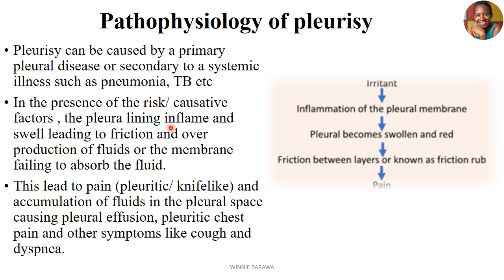The pathophysiology of pleuritis explains how the disease starts. Pleuritis occurs in the presence of another disease — it could be pneumonia, TB, or pulmonary neoplasms and cancers. Pleuritis can be caused by a primary pleural disease or secondary to systemic illnesses like pneumonia and TB. In the presence of these causative factors, the pleural lining will get inflamed and swell, leading to friction and overproduction of fluids.